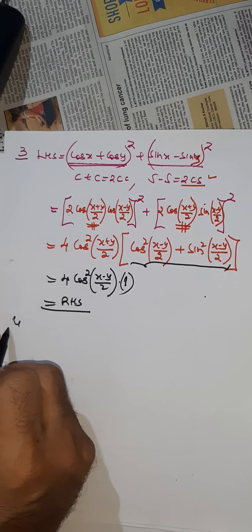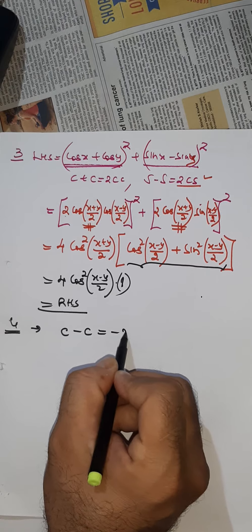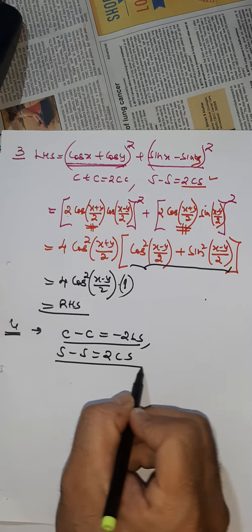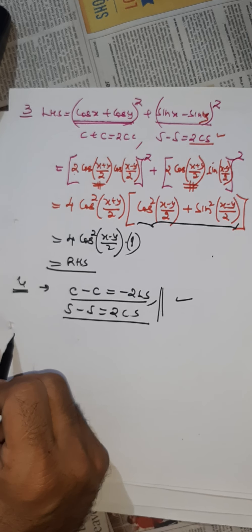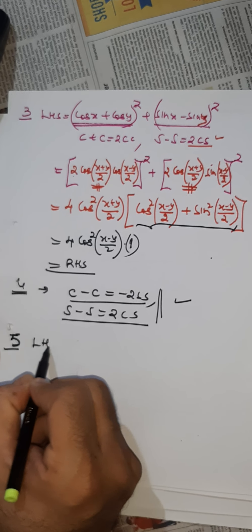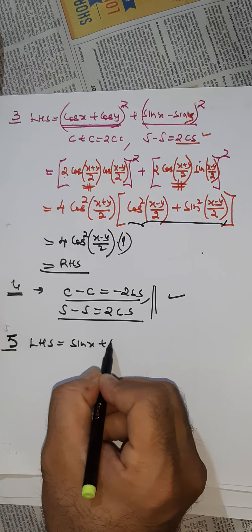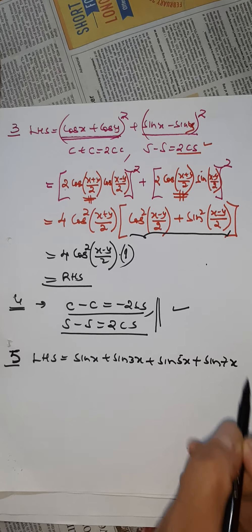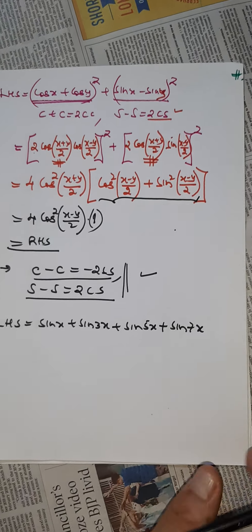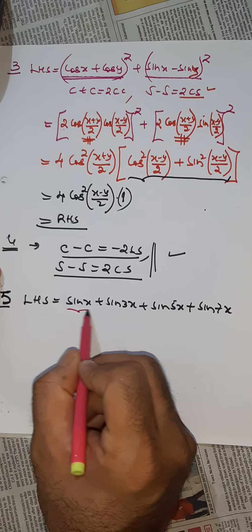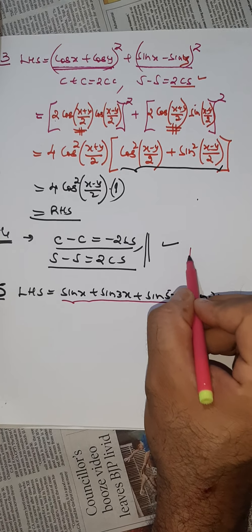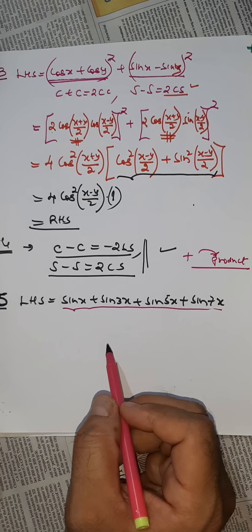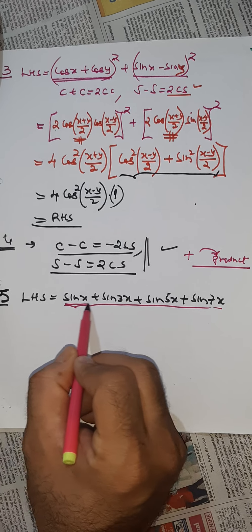In question four, similarly use c−c = −2ss and s−s = 2cs to complete the proof. Question five: the LHS is sinx + sin3x + sin5x + sin7x. To go from addition to product, use the factor formula. We use s+s which gives 2sc.